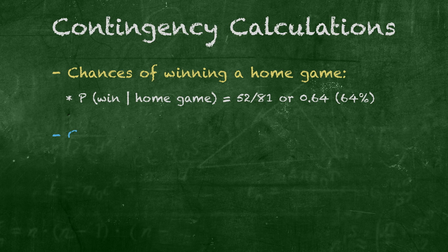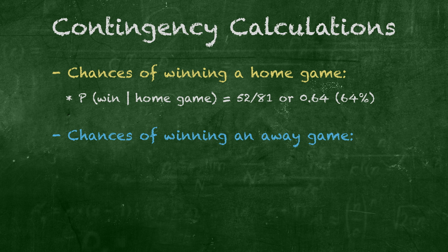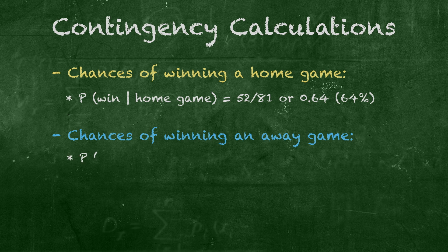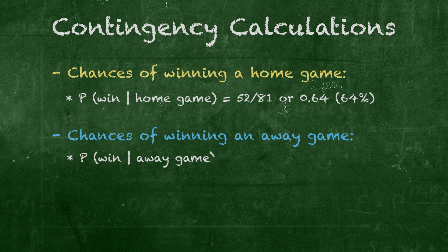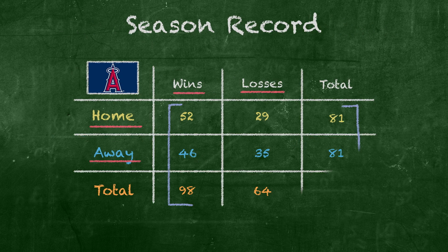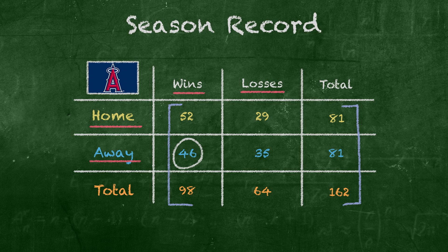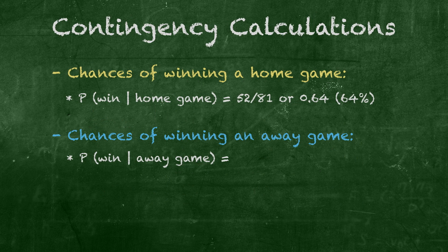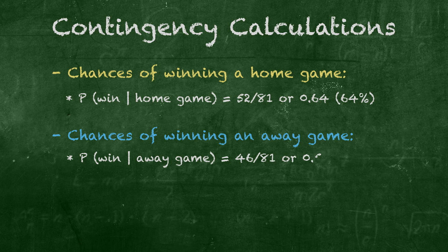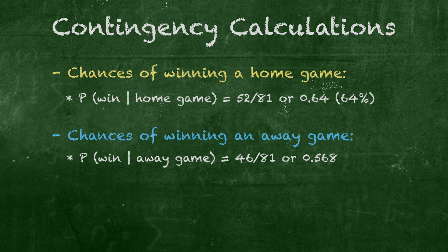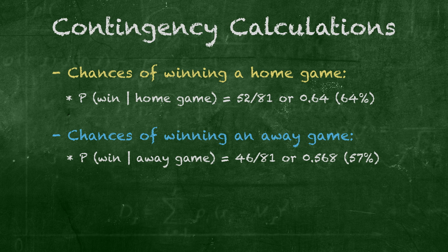What about the probability of winning an away game, which I take would be expressed as the probability of a win given that it was an away game? Bang, Robert! Angels won 46 out of 81 away games. So the probability is 46 out of 81, or .568 — meaning just around 57 percent. Puts it in!